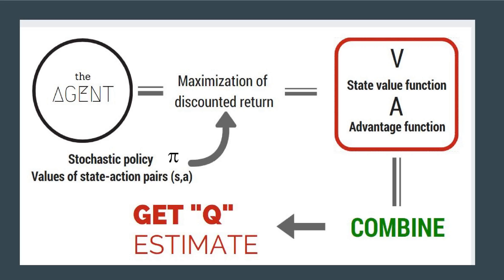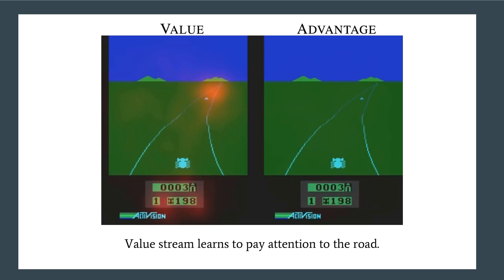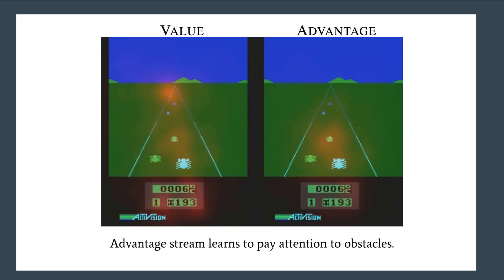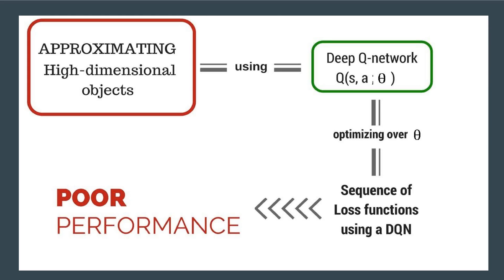How can we translate these concepts into real time? Here is the Atari Enduro game — 'see, attend and drive.' The image presents value and advantage maps. Without obstacles ahead, the value stream learns to pay attention to the road. On the other hand, when obstacles are ahead, the advantage stream learns to pay attention to the obstacles.